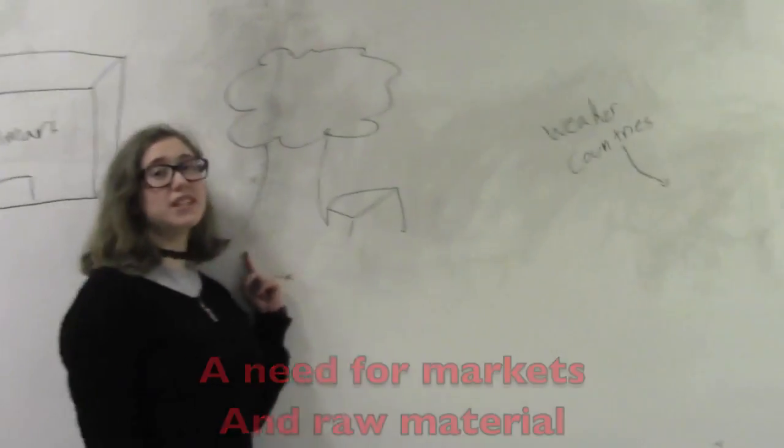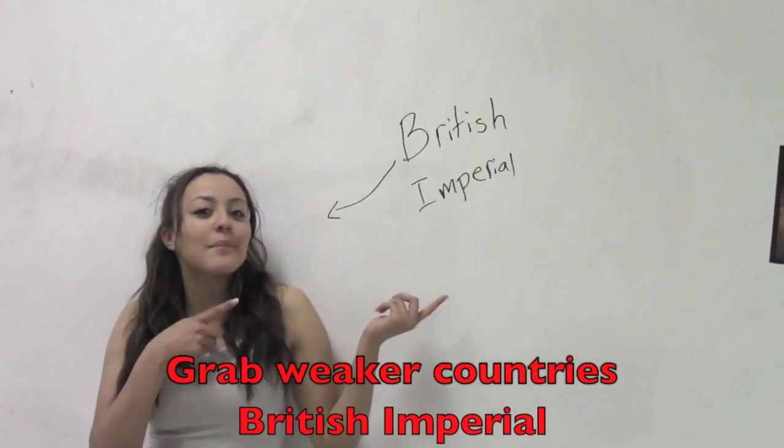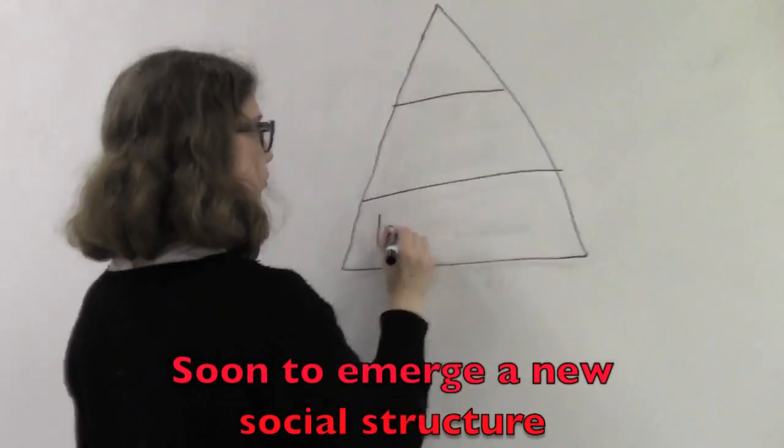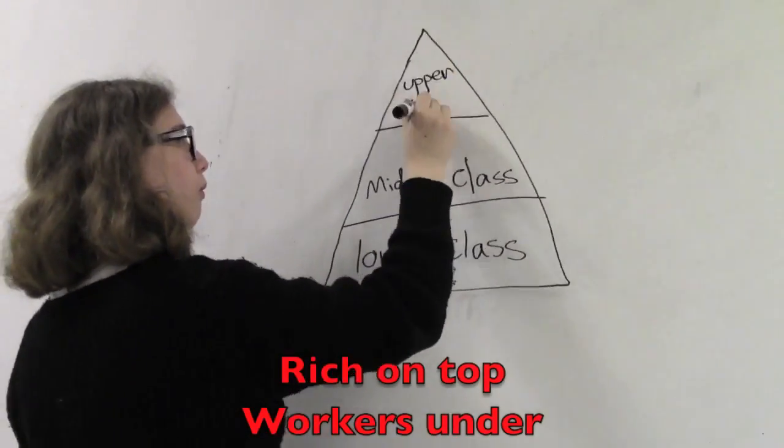And raw material — grab weaker countries, British imperial. Soon to emerge a new social structure: rich on top, workers under.